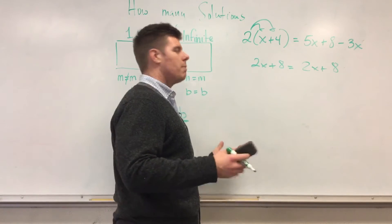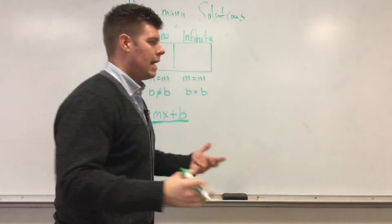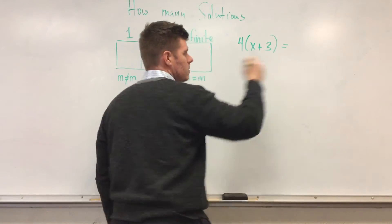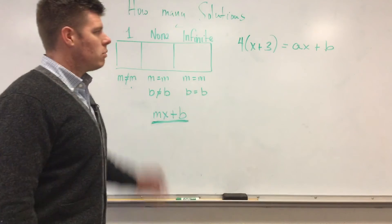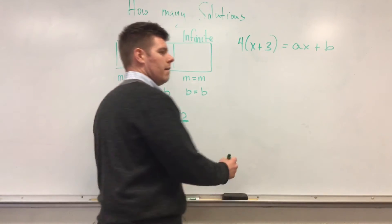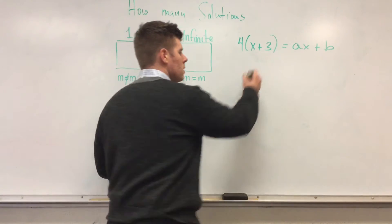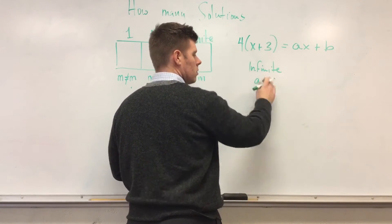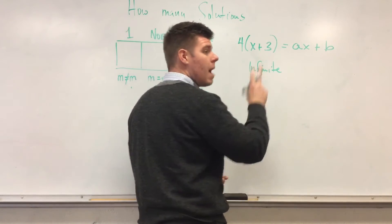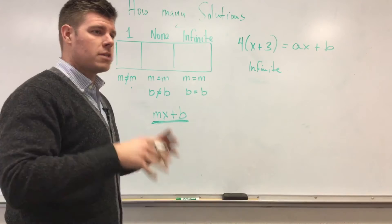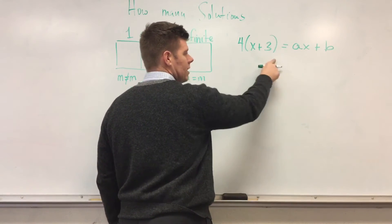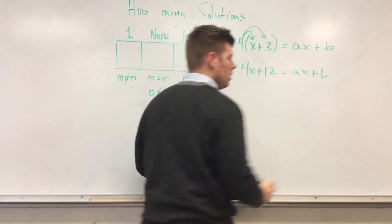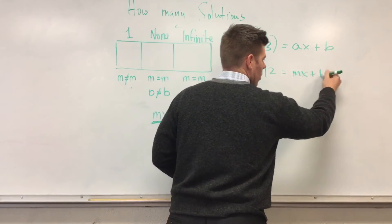Now let's apply a deeper level of knowledge. Say I have 4(x + 3) = ax + B. If I want infinitely many solutions, I know my number of X's must be equal on both sides, and my constants must be identical on both sides. First, simplify the left side: 4(x + 3) = 4x + 12. So if I want infinite solutions, a must equal 4 and B must equal 12.